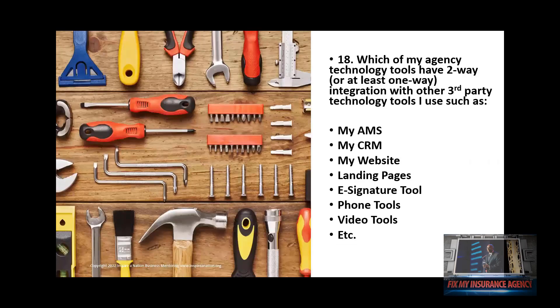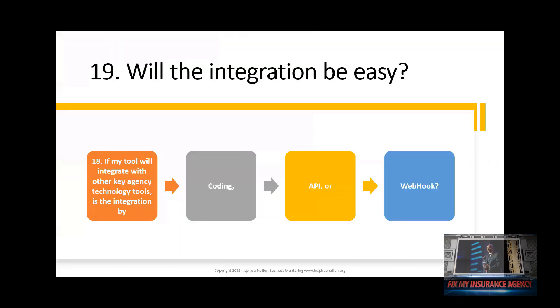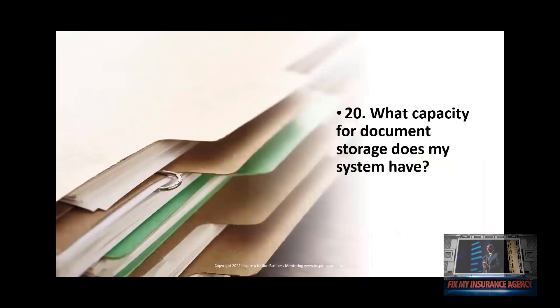Which of my agency technology tools have two-way or at least one-way integration with other third-party technology tools I use, such as my AMS, my CRM, my website, landing pages, e-signature tool, phone tools, video tools, et cetera? Will the integration be easy? Will it be by coding, by API, or by webhook? And what capacity for document storage does my system have?